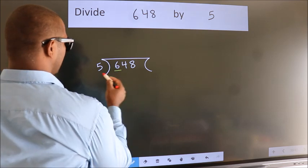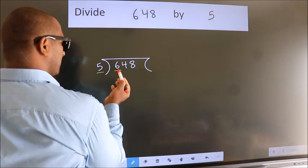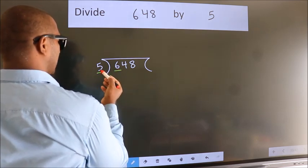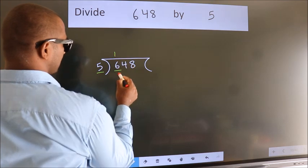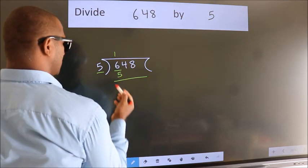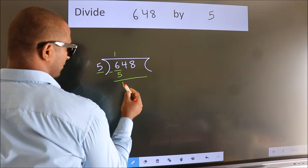Here we have 6, here 5. A number close to 6 in 5 table is 5 once 5. Now we should subtract. We get 1.